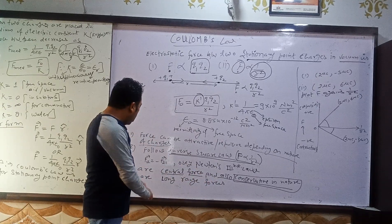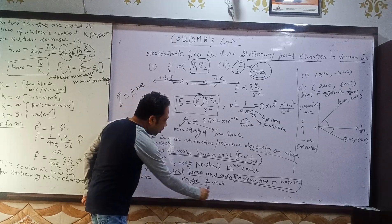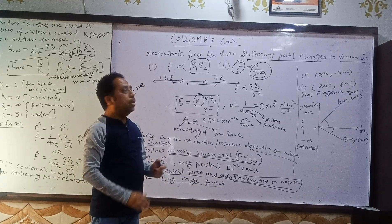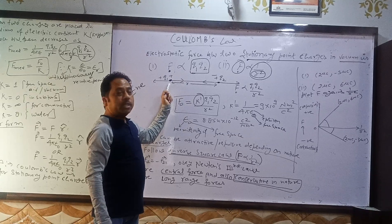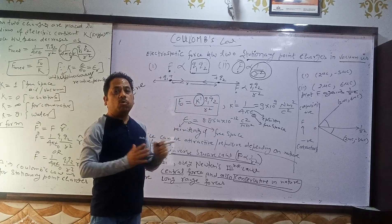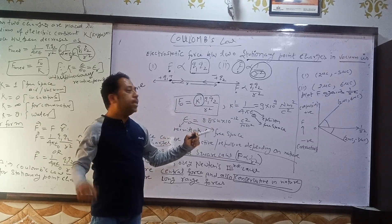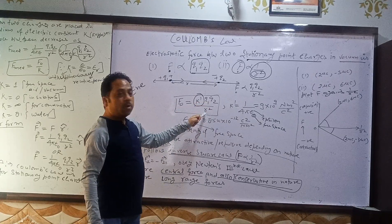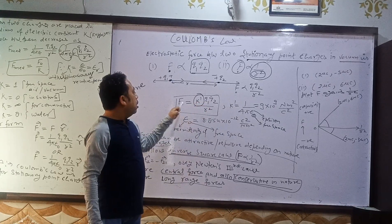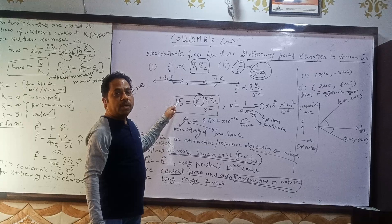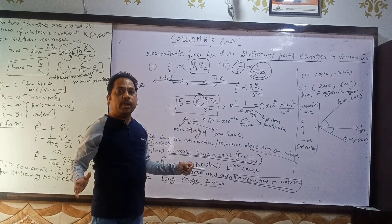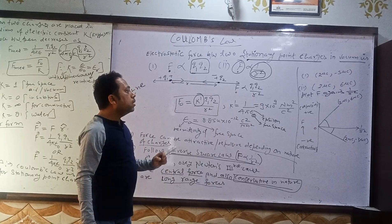The next property is that these are long range forces. These forces act up to a long distance. As you know the force formula is K·q1·q2 upon R square. It becomes zero only when R goes to infinity, meaning they can act for a very long distance.